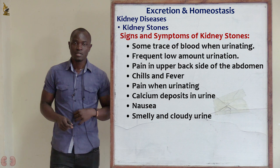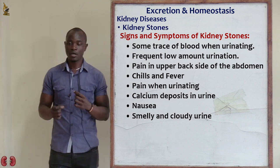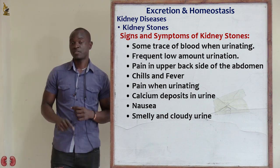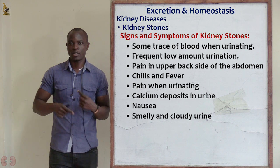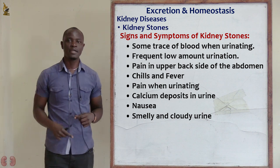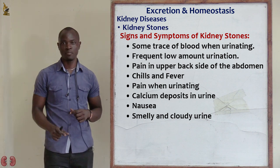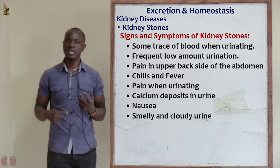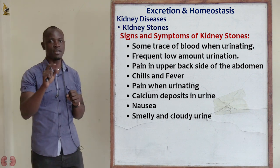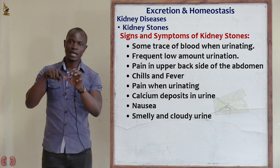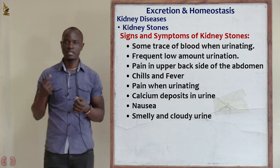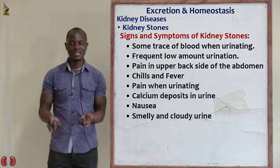There is also frequent urination, but not large amounts — you go to urinate and pass very low quantity of urine, then feel the urge again after a few minutes and again pass very little. This happens because the stone has blocked the pelvis, so only very small amounts of urine manage to pass through.